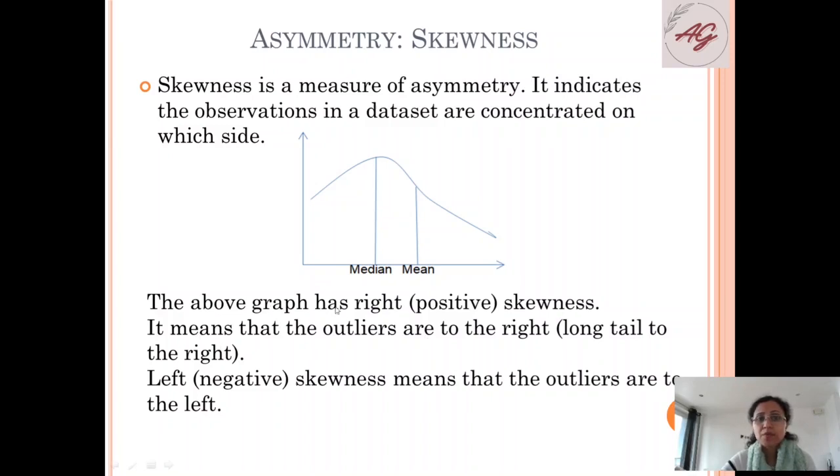This above graph has right skewness - right side, that means positive. It means that the outliers are to the right. So it means long tail to the right. This is the long tail to the right.